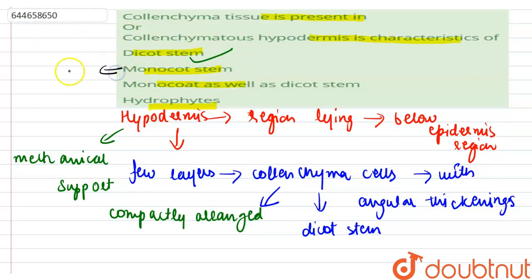Now in the monocot stem, sclerenchymatous hypodermis is present, so this is incorrect. Monocot as well as dicot is also incorrect. And in hydrophytes the hypodermis is poorly developed and is not colenchymatous. The hypodermis is poorly developed, so this option is also incorrect.